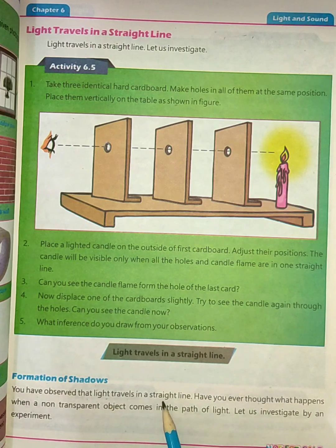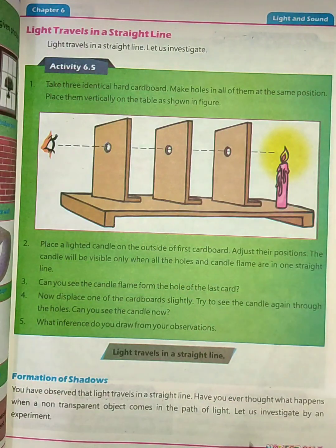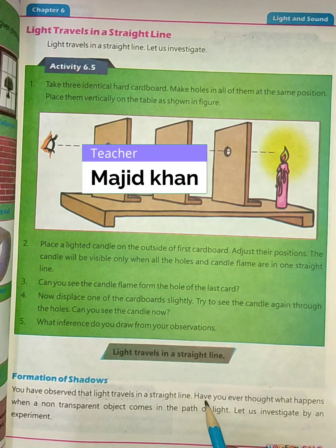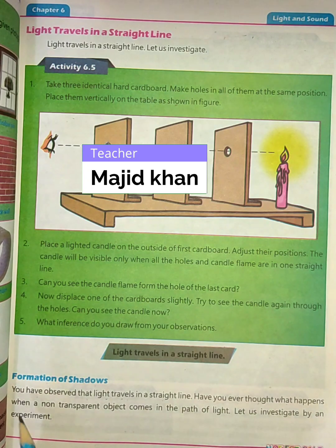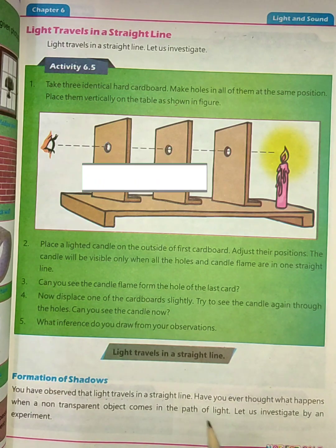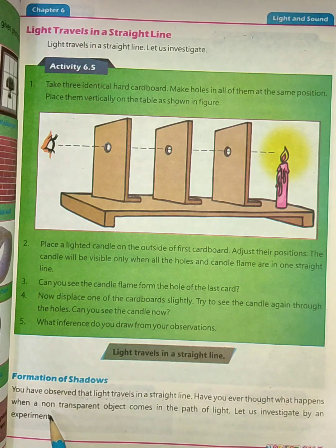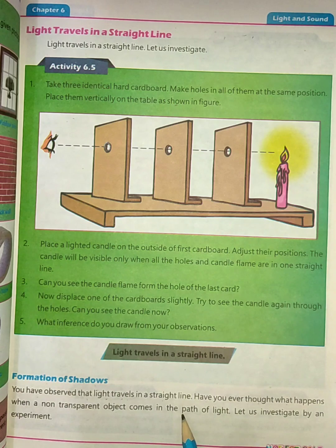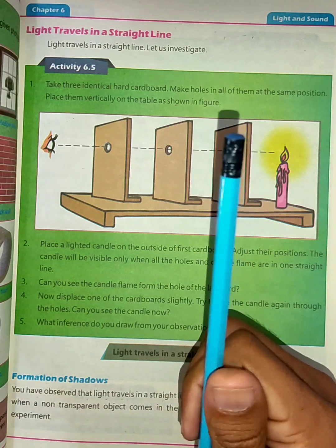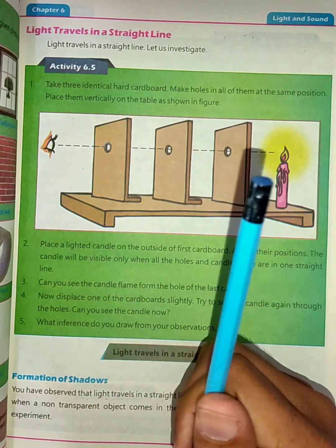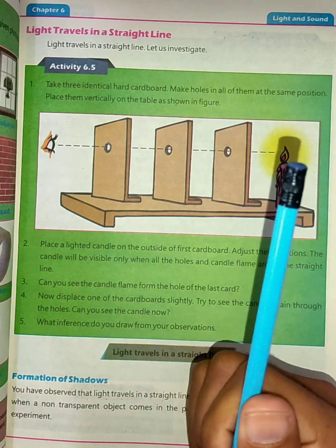Light travels and moves in a straight line path. Have you ever thought about what happens when a non-transparent object comes in the path of light? When a non-transparent object — one that does not allow light to pass through — is placed in the path of light, it blocks it.